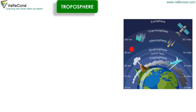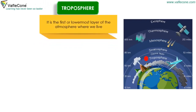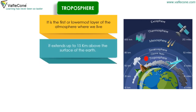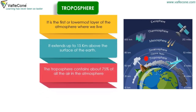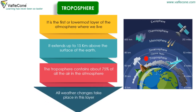Troposphere is the first or lowermost layer of the atmosphere where we live. It extends up to 15 kilometers above the surface of the earth. The troposphere contains about 75% of all the air in the atmosphere. All weather changes take place in this layer.